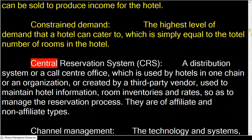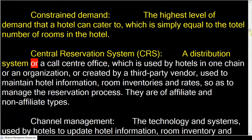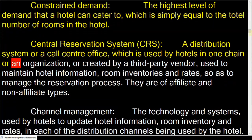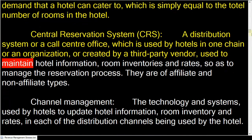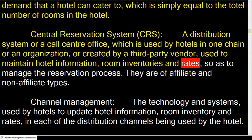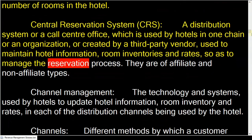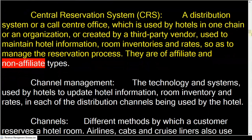Central Reservation System: a distribution system or a call center office, which is used by hotels in one chain or an organization, or created by a third-party vendor, used to maintain hotel information, room inventories and rates, so as to manage the reservation process. They are of affiliate and non-affiliate types.